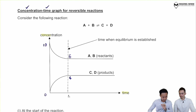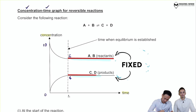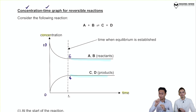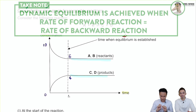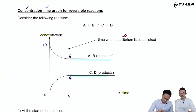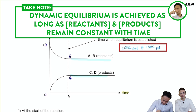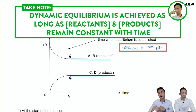At time T1, the concentration of reactants and products now remains fixed. When the concentration of reactants and products remains constant with time, dynamic equilibrium has been established. Note that the concentration of reactants does not have to equal the concentration of products — they just need to be constant with time.